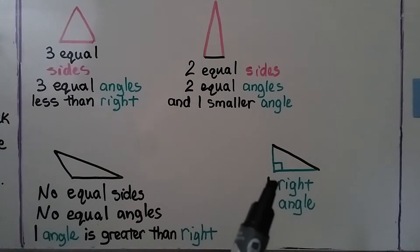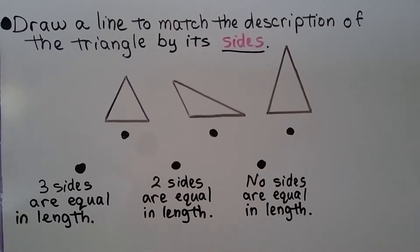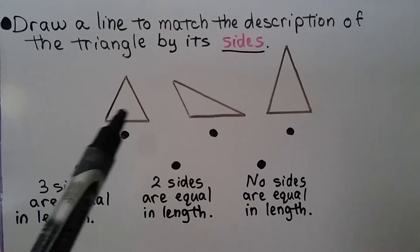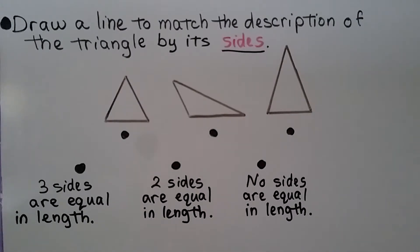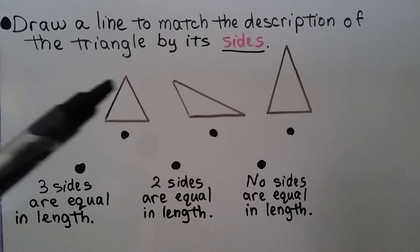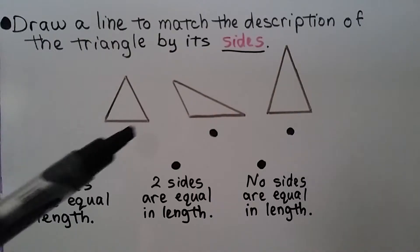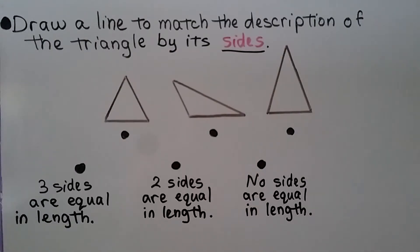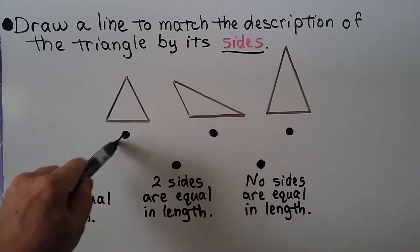We have a triangle that does have one right angle. We need to draw a line to match the description of the triangle by its sides. The descriptions are: three sides are equal length, two sides are equal length, and no sides are equal in length. If you said three equal sides for the first triangle, you're right — we can draw a line from this dot to this dot.